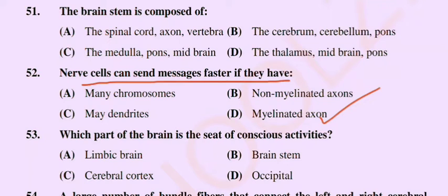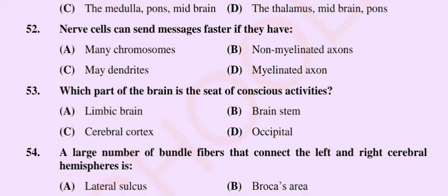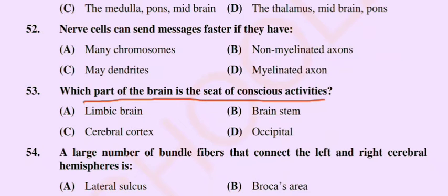Question number 53: Which part of the brain is the seat of conscious activities? Option A: limbic brain, option B: brain stem, option C: cerebral cortex, option D: occipital. The correct option is option C: cerebral cortex.